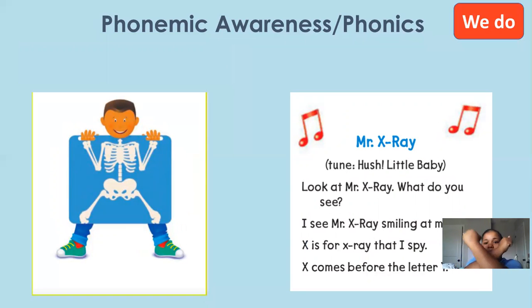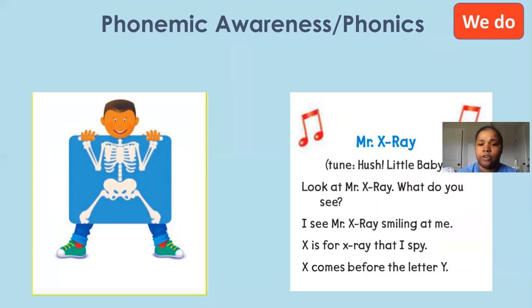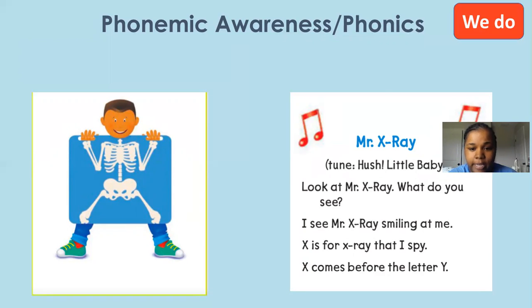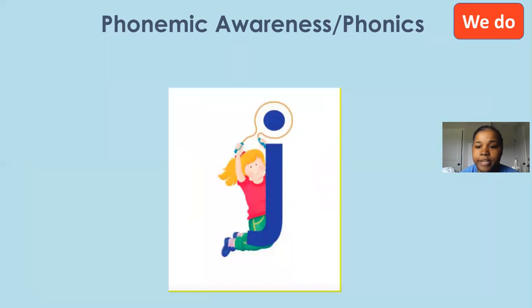Letter O... X. It says Mr. X-ray. Look at Mr. X-ray — what do you see? I see Mr. X-ray smiling at me. X is for X-ray that I spy. X comes before the letter Y. Mr. X-ray, the letter J.